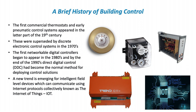Once we had networkable controllers we could share information. Using the outside air temperature example, you would have one sensor, the information collected by one controller, and then distributed across the network. That's a very simple example of why networking controllers became so important.